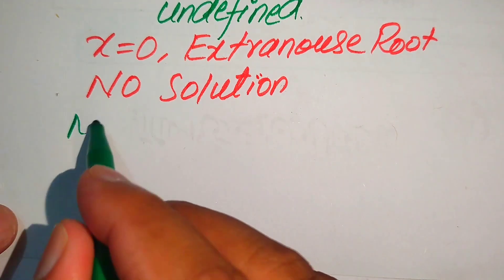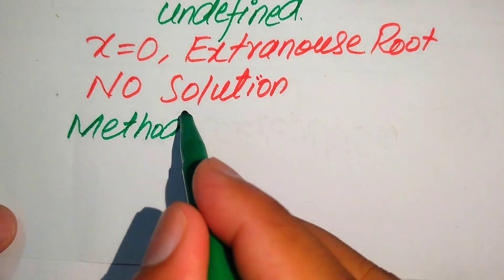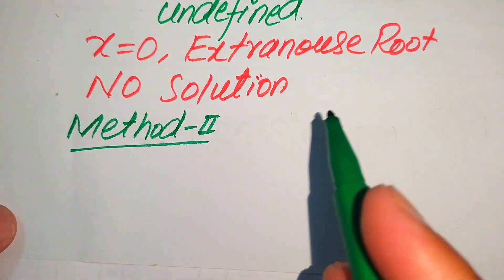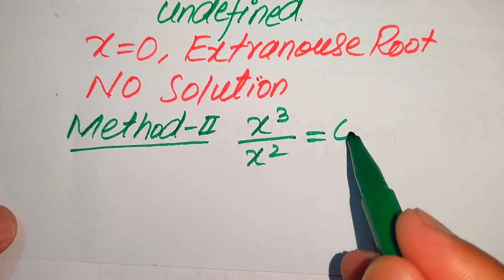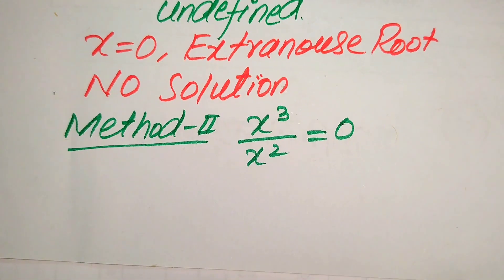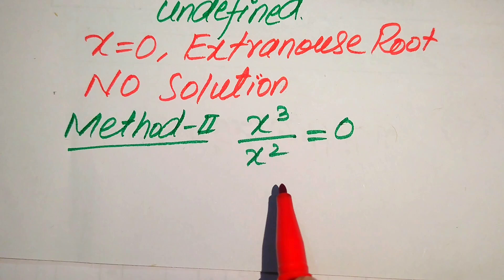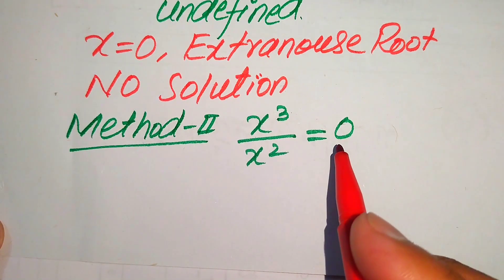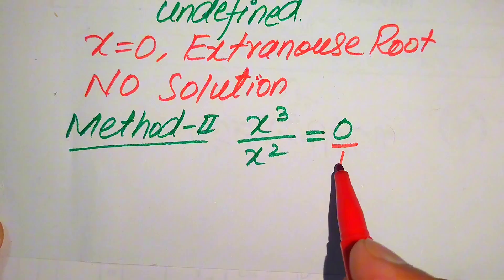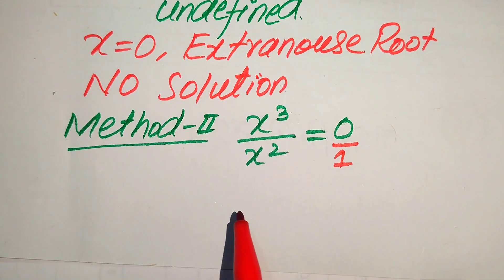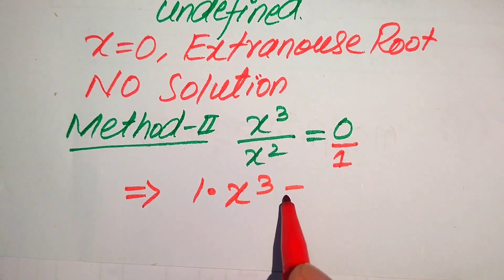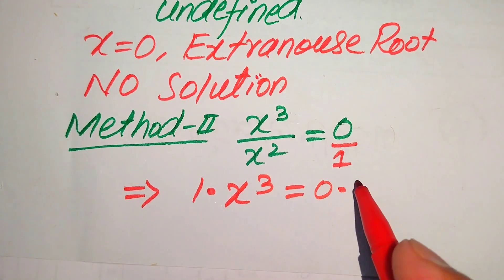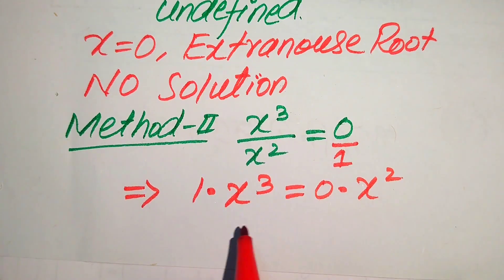Now we solve this problem using the second method. In the second method we discuss how to find the value of x; the remaining verification procedure will be the same as in method one. Here we cross-multiply the terms. You see the exponent of this term is one, so when we cross-multiply it will be written as 1 multiplied by x cubed equals x squared multiplied by 0.